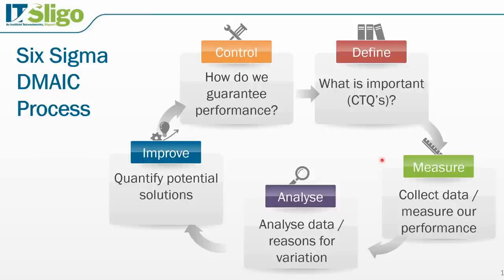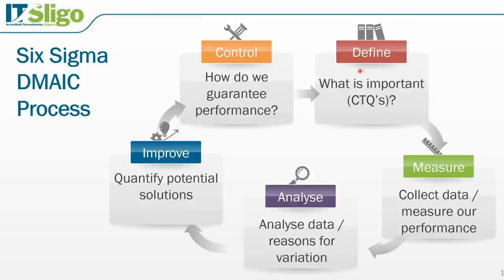Let's look at the Six Sigma DMAIC process. DMAIC stands for Define, Measure, Analyze, Improve, and Control. In the Define phase, we understand what's important — the critical-to-quality characteristics for the customer. In the Measure phase, we collect data and measure performance. In the Analyze phase, we analyze the data and the reasons for variation. In the Improve phase, we quantify potential solutions, select the final solution, and verify it. Finally, in the Control phase, we guarantee ongoing performance, ongoing process control, and implement a control plan.